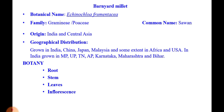The botanical name of barnyard millet is Echinochloa frumentacea, and it comes under the family Gramineae or Poaceae. It originated from India and Central Asia. As far as geographical distribution is concerned, this crop is grown in India, China, Japan, Malaysia, and to some extent in Africa and USA. In India, it is grown in Jammu, UP, Tamil Nadu, Andhra Pradesh, Karnataka, Maharashtra, and Bihar.